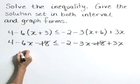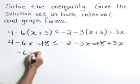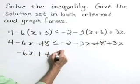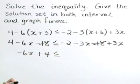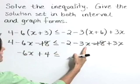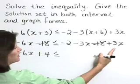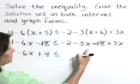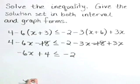So on the left-hand side, we have -6x + 4 that's less than or equal to. On the right-hand side, we've got -3x + 3x, they cancel, leaving us with -2.